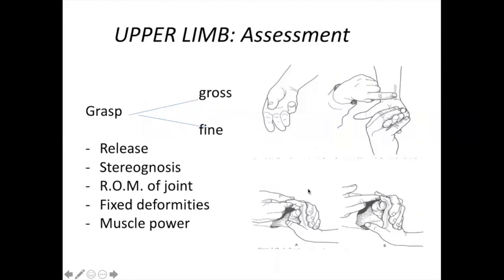For upper limbs, the most important things to assess are release phenomena, stereognosis, range of motion, whether there is fixed deformity, muscle power, and the grasp phenomena — whether he is able to grasp — and fine movement of the thumb and fingers.